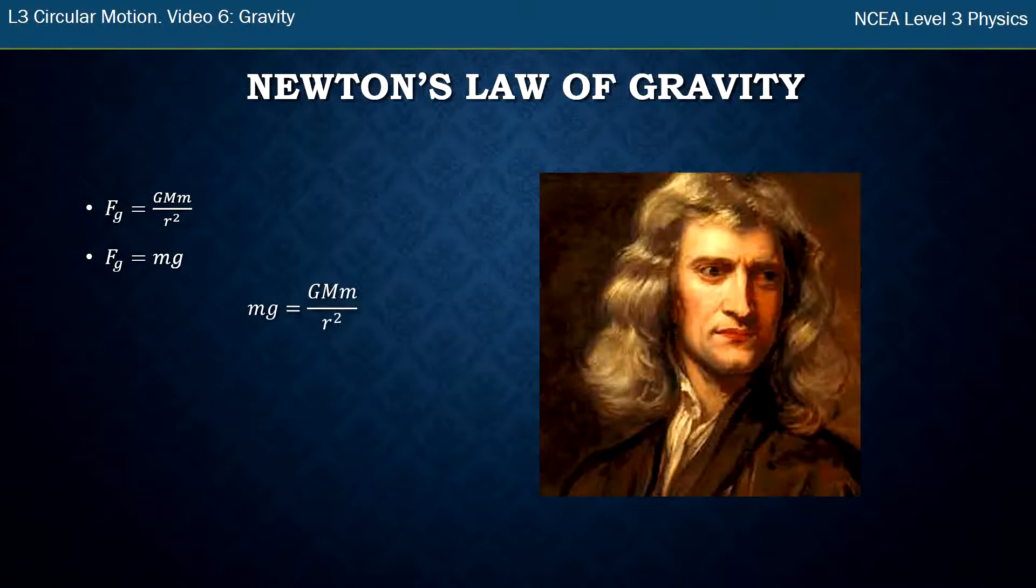Then you can do a bit of rearranging, a bit of simplification. The little m's on both sides cancel out. There's an m on both sides, you can just divide the whole thing by little m, and you're left with: gravitational field strength little g equals big G times M over r squared.